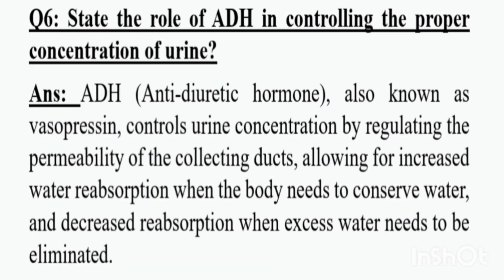Question number 6: State the role of ADH in controlling the proper concentration of urine. Answer. ADH, antidiuretic hormone, also known as vasopressin, controls urine concentration by regulating the permeability of the collecting ducts, allowing for increased water reabsorption when the body needs to conserve water, and decreased reabsorption when excess water needs to be eliminated.